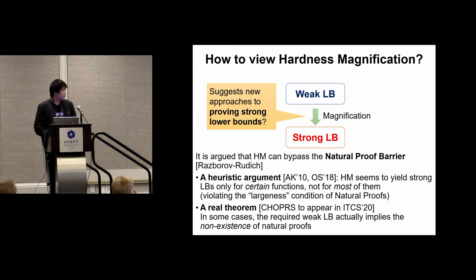A heuristic argument is that hardness magnification seems to yield strong lower bounds only for certain functions, not for most of them, which violates the largeness condition of natural proofs. In recent work, there is also some more rigorous argument supporting this. It is proved that in some cases, the required weak lower bounds for magnification actually implies the non-existence of natural proofs.